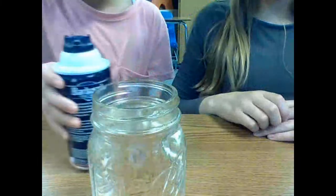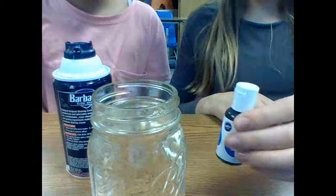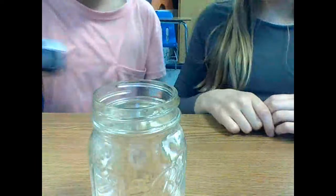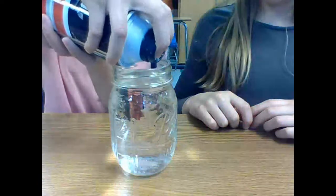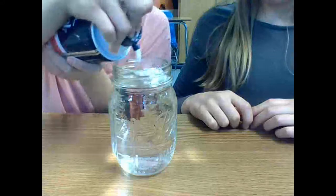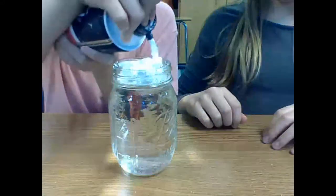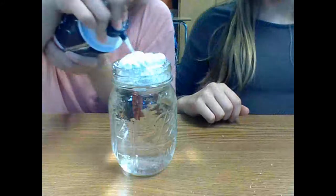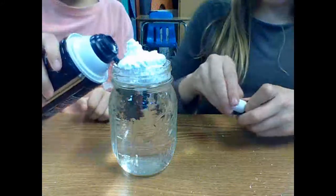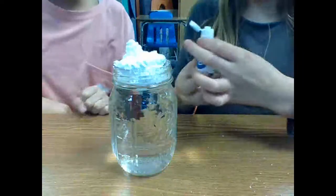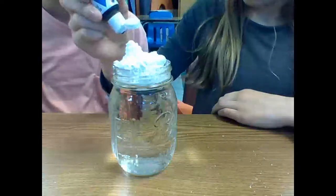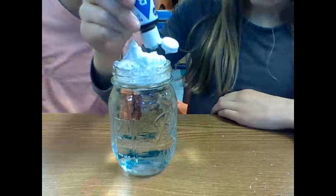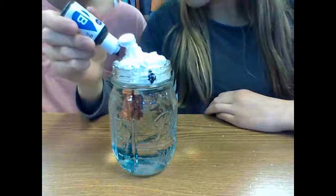For project number one, you're gonna need a glass of water, shaving cream, and blue food dye. First, you're gonna take your shaving cream and put it on like it's clouds, just until it looks like clouds. Next, take your blue food coloring and drop a few drops of whatever color food coloring you're using.